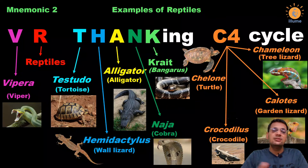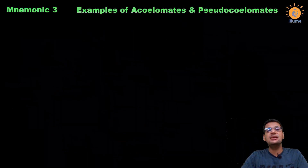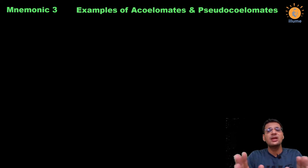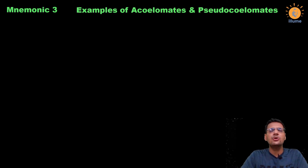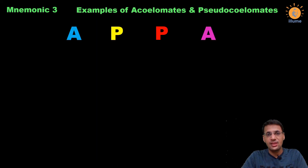Now by the next mnemonic we will remember the examples of acoelomates and pseudocoelomates. This is a very frequently asked direct question — which phylum is acoelomate and which is pseudocoelomate. Whenever such a question about coelom is asked in an exam, just close your eyes and remember your father. In Tamil, father is called 'Appa,' and your Appa will help you remember all those examples.